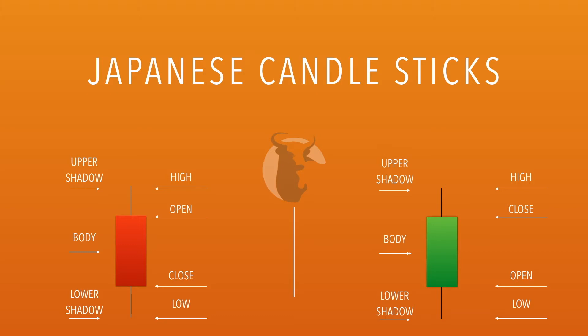I'm going to show you guys exactly how each candle opens. Let's look at the red candle, the bearish candle. The candle actually opens up at the top, and when it creates a new higher point, it would go up, and then when it comes down in retracement, it would leave a wick, or in other terms, a shadow.